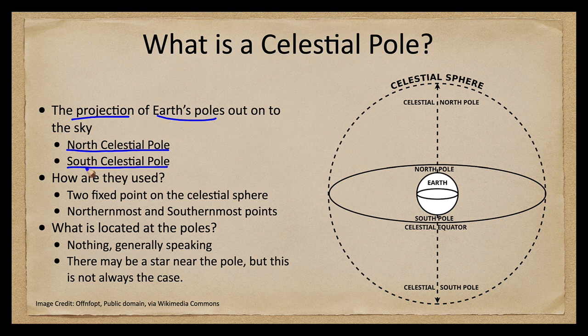So what is important about these two? They are the two fixed points on the celestial sphere — the only two points that are fixed — and everything will seem to rotate around them. So while we watch other objects and stars rise and set, the poles will remain in the exact same spot in the sky.